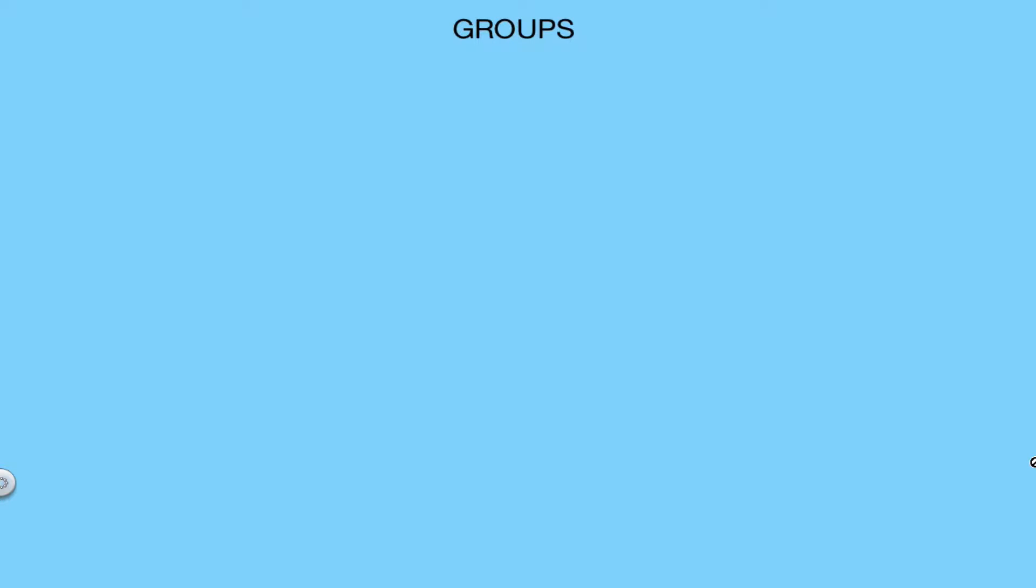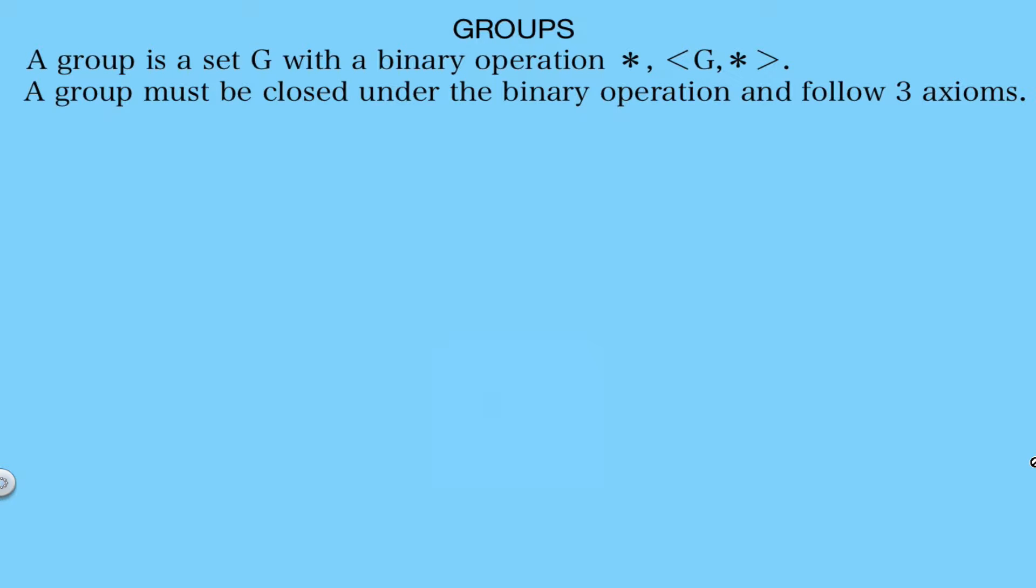Hi, this video will be an introduction to mathematical groups. A group is a binary structure, so it's a set which we'll call G with a binary operation star. This set has to be closed under the operation and also follow three axioms.